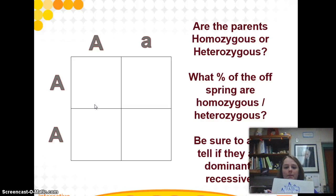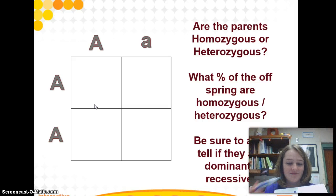So what percent of my offspring are what? To me, it looks like I have two homozygous dominant because they both have capital letters, and two heterozygous. Homozygous dominant, heterozygous. Awesome.